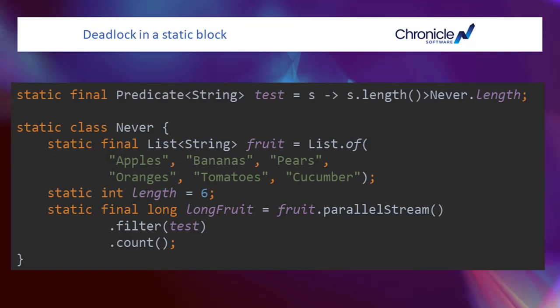In this clearer example, the predicate does have an explicit dependency on a field called length, and to access this field the thread has to wait for the entire class to be initialized.